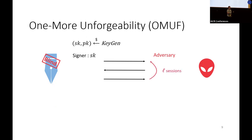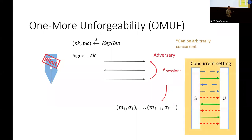In the security game, the adversary can interact with a signer for L sessions. The adversary wins if it can output L plus one valid message-signature pairs. Here, all the sessions can be arbitrarily concurrent. In other words, one-more unforgeability means the adversary cannot forge a number of signatures which is more than the number of signing sessions.